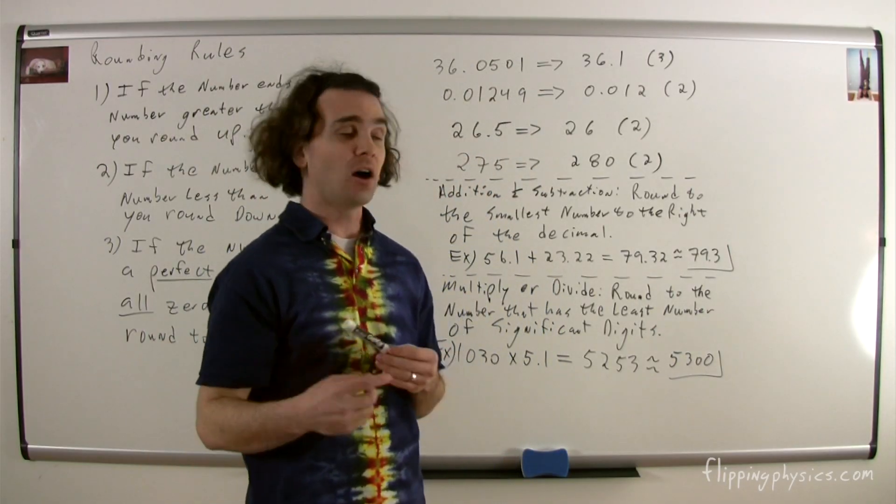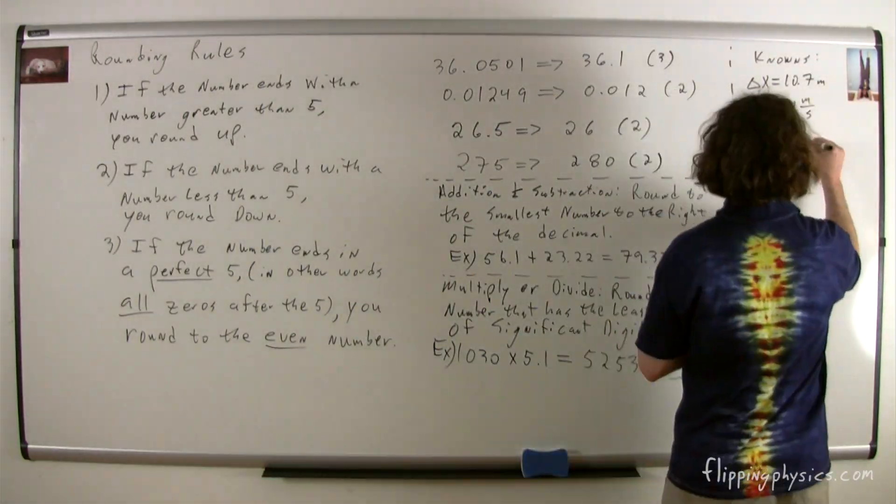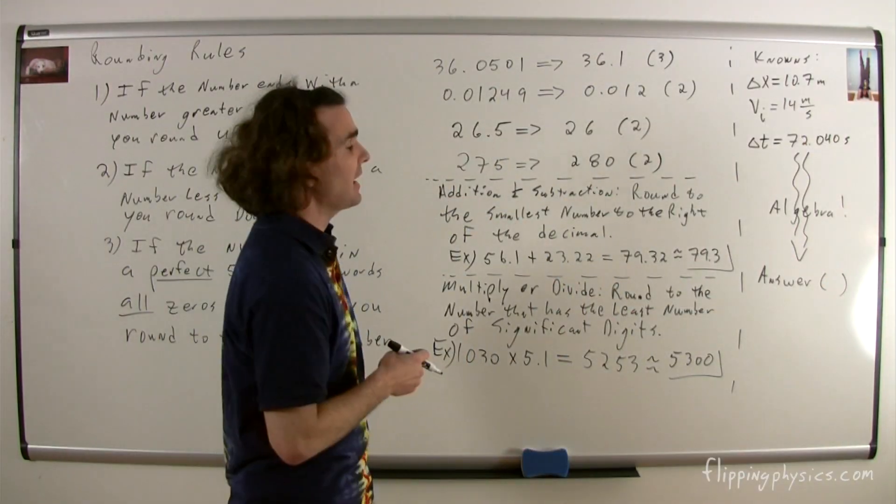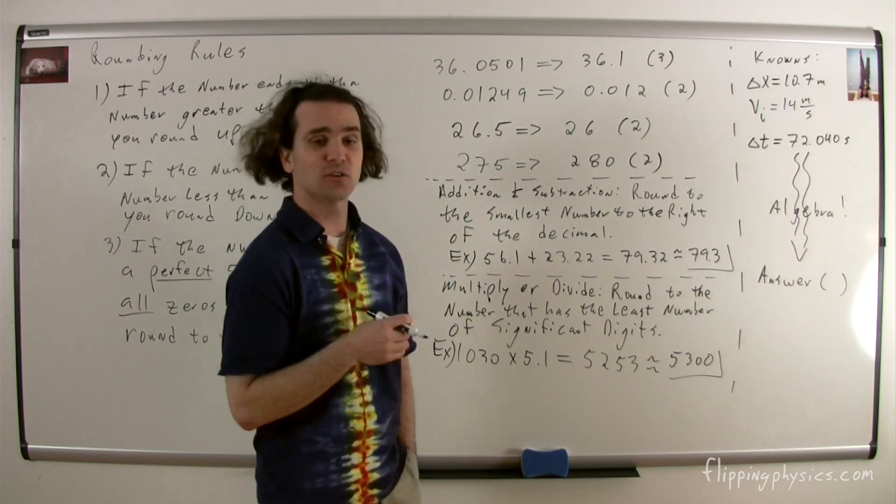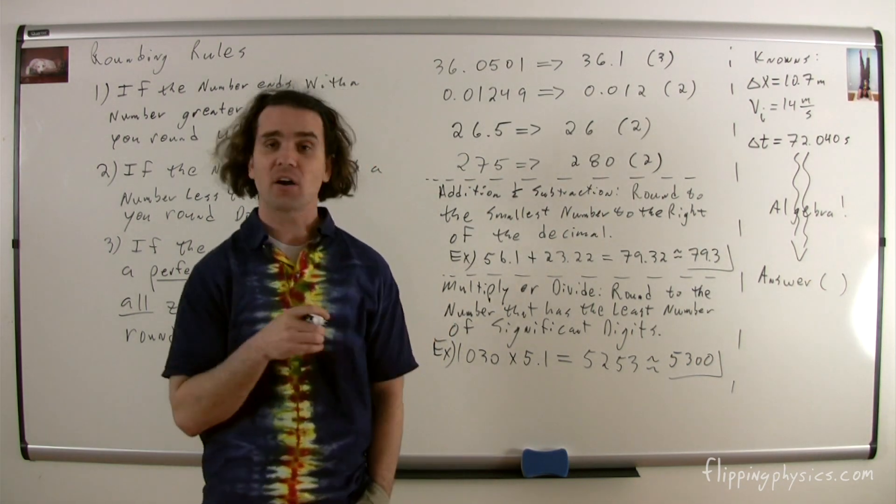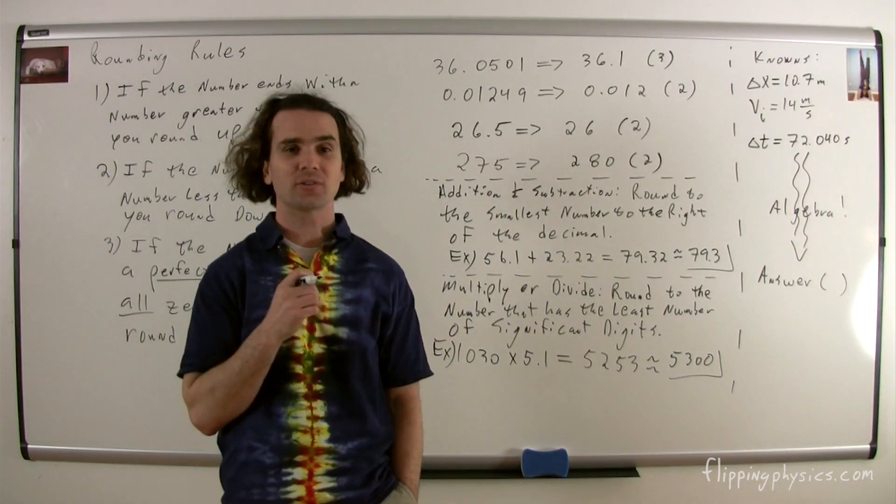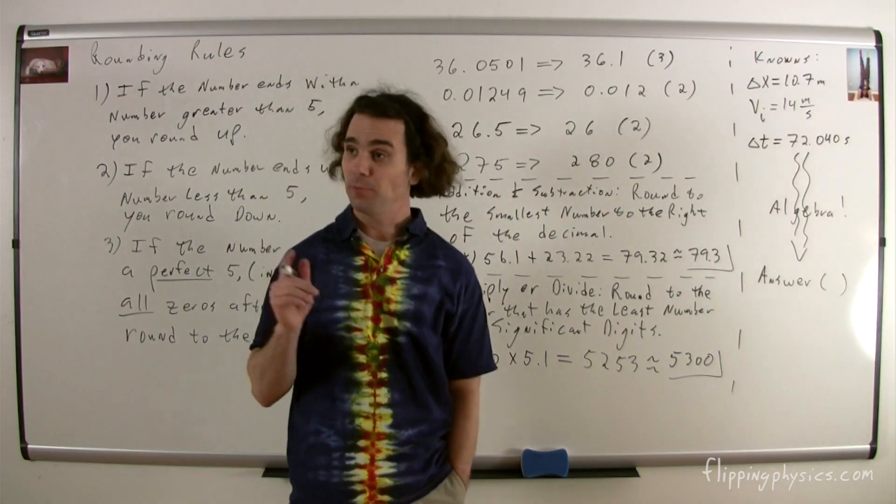For example, if our known values are: our displacement, or delta x, is 10.7 meters, our initial velocity, or v sub i, is 14 meters per second, and our change in time, or delta t, is 72.040 seconds. How many significant digits should we have on our answer? Bo?